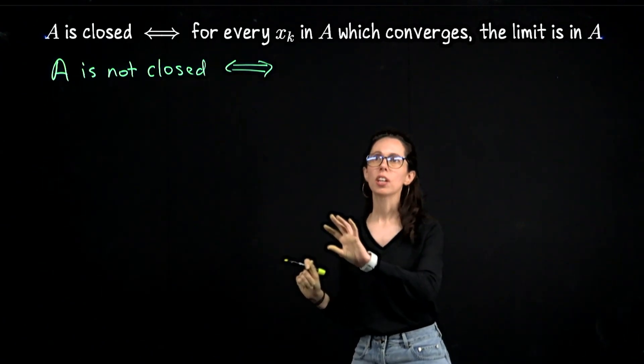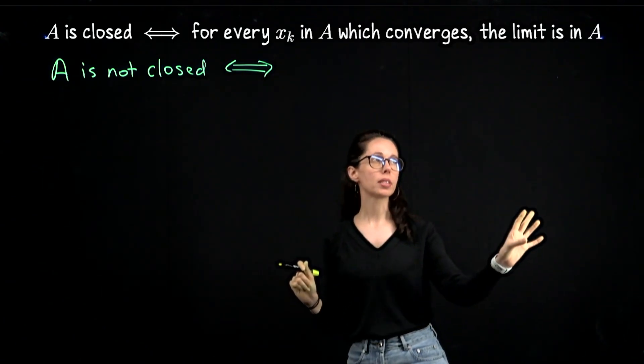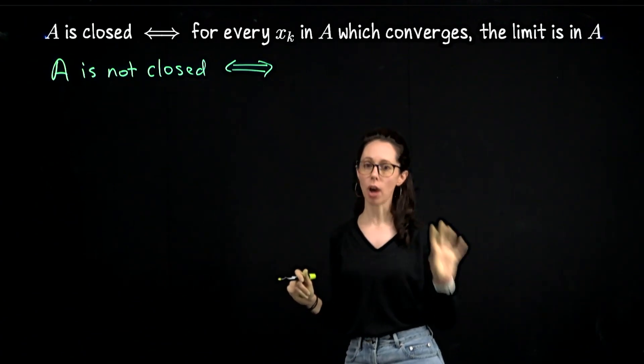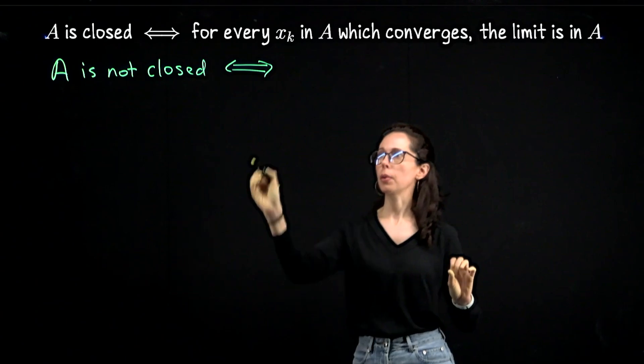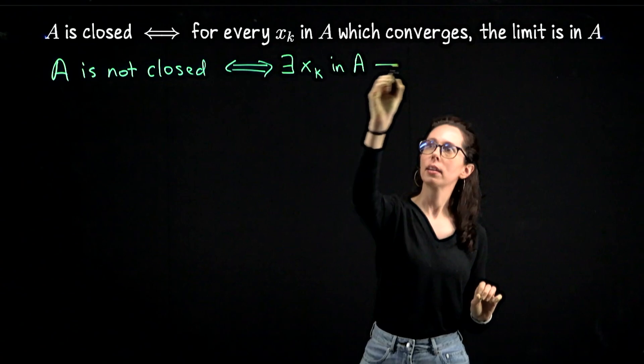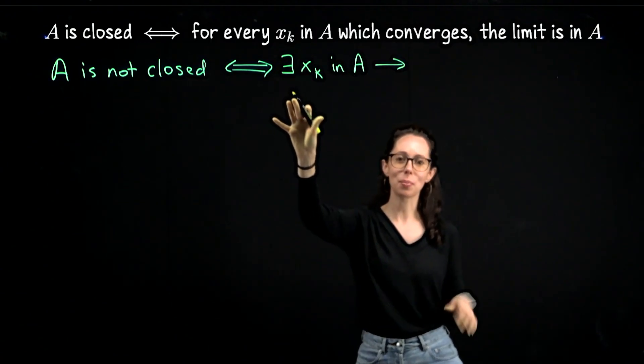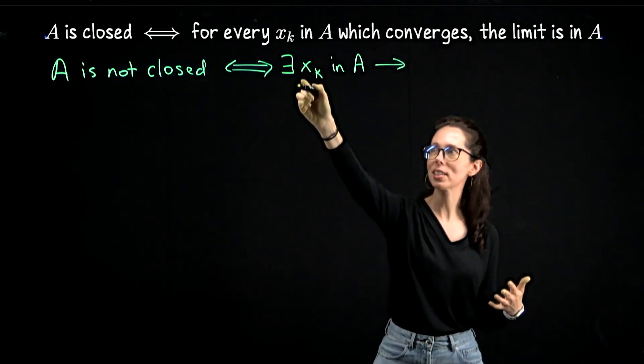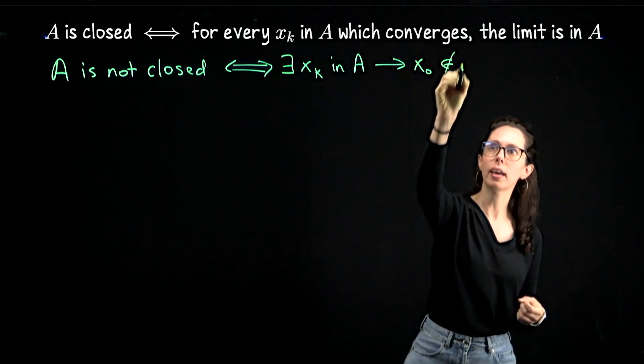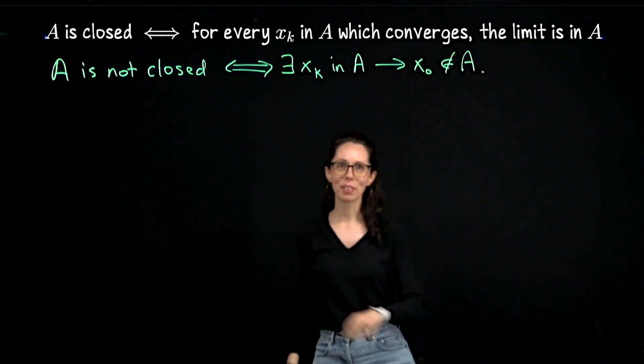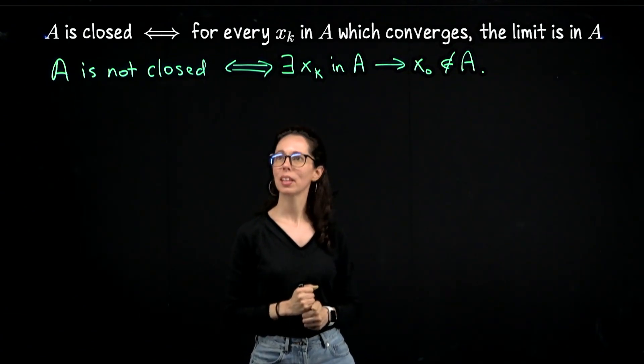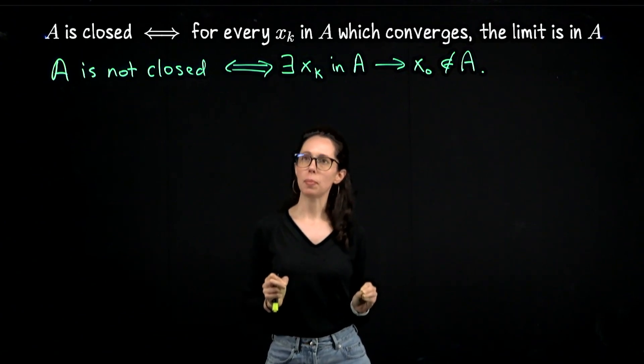The negation of the idea that for all sequences you can observe a certain behavior is that there exists a sequence for which you do not observe that behavior. So there exists x_k in A converging to—my notation here is lazy, but that's because this is kind of brainstorming—so there exists a sequence in A converging to a limit not in A. Again, this is not formal writing. That's just me using shorthand. This is an if and only if statement.